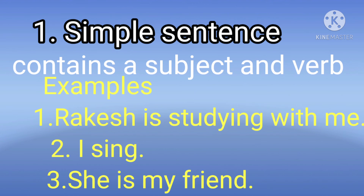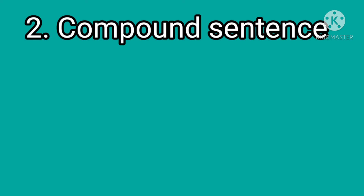The first type is simple sentence. A simple sentence contains a subject and a verb. Examples: Rakesh is studying with me. I sing. She is my friend.